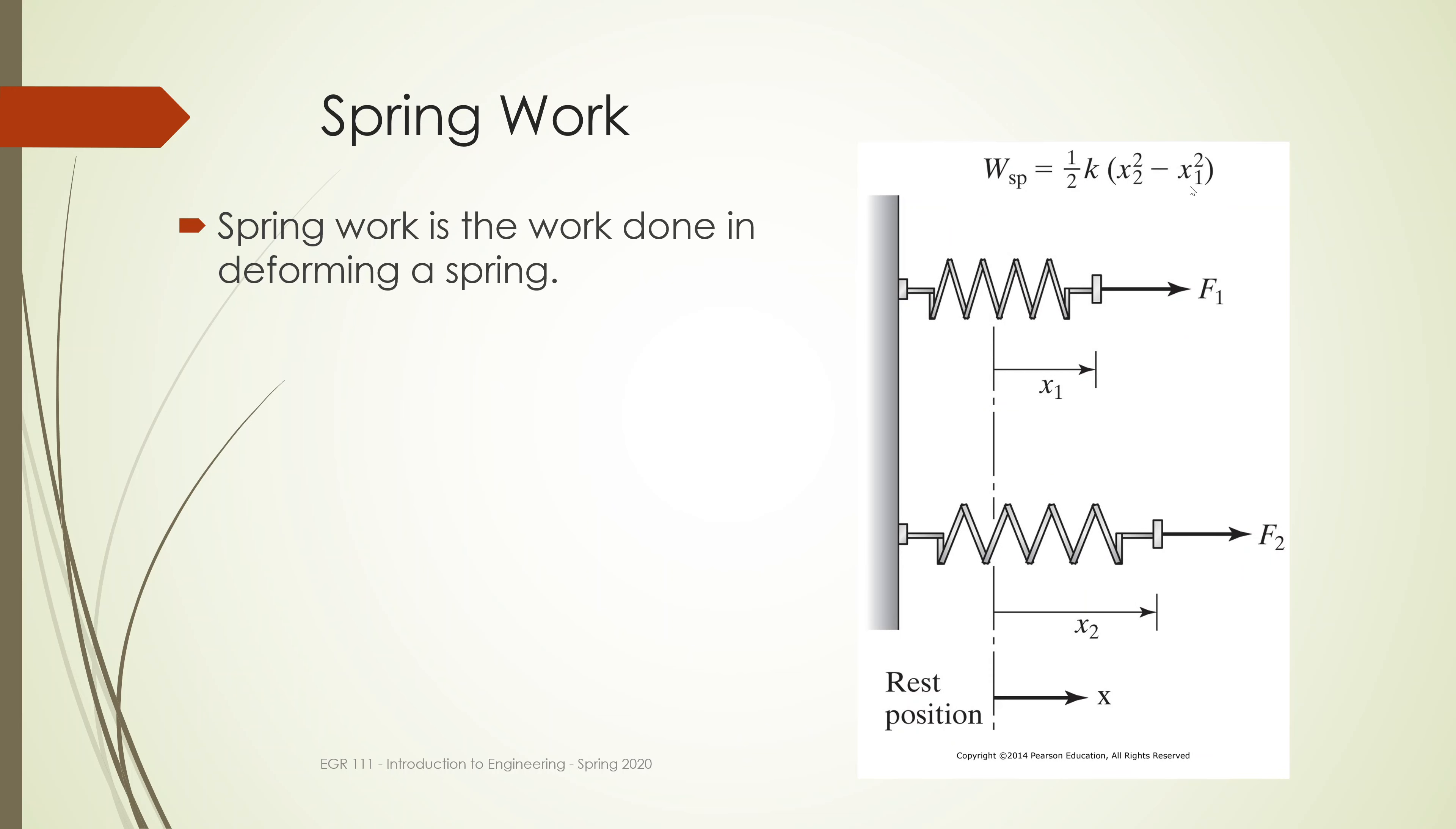Spring work—this looks like the potential energy equation. You have some initial stretch represented by x1 squared, and then a final stretch x2. This is the work done in deforming the spring. The work we've applied is represented by the difference between these two. We have initial work to stretch it this far, and then to a final position x2. It's the difference between the force to stretch it to x1 and the force to stretch it to x2.